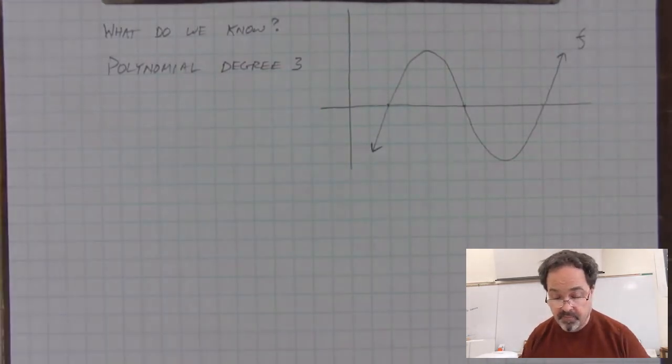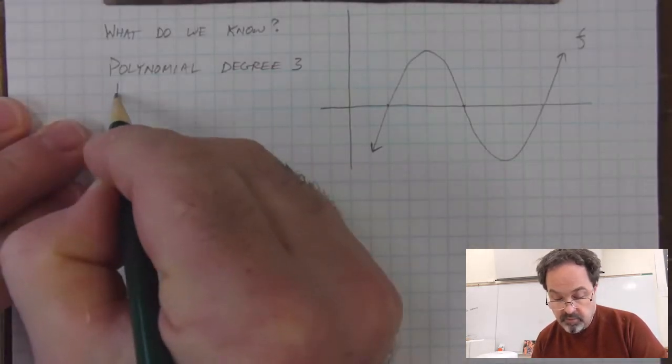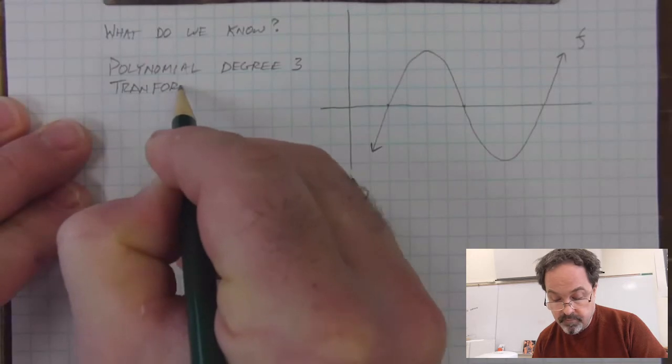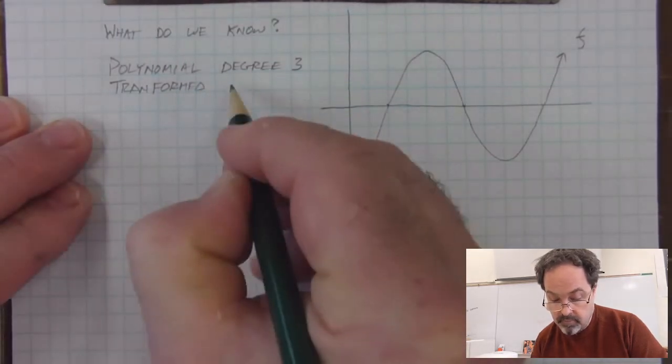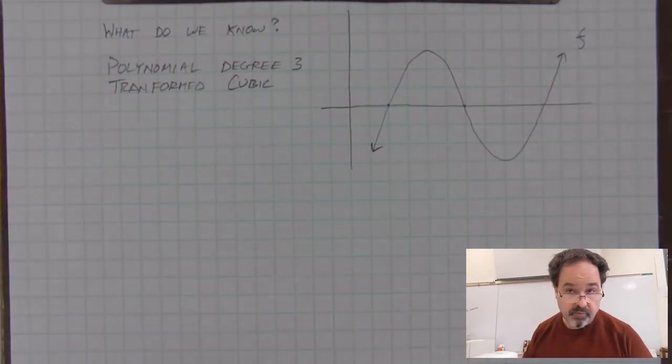That means that of all the terms of the polynomial that this function could have, the highest exponent will be 3. Which means that we could think of this as a transformed cubic. Cubic literally meaning power of 3.